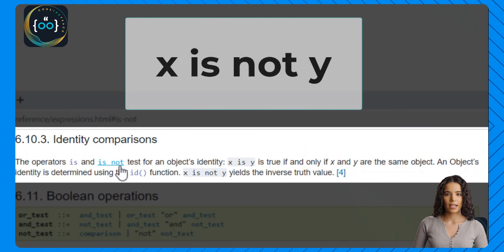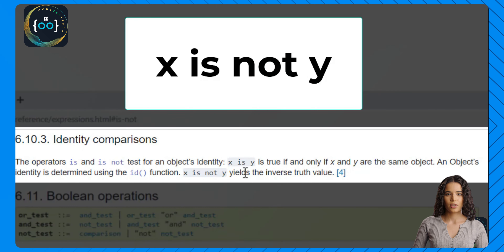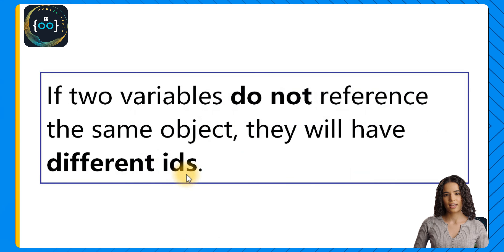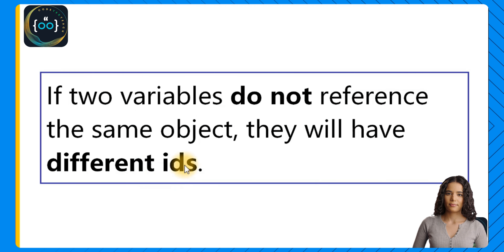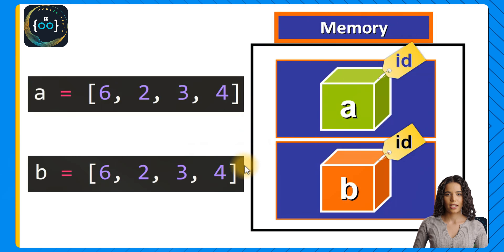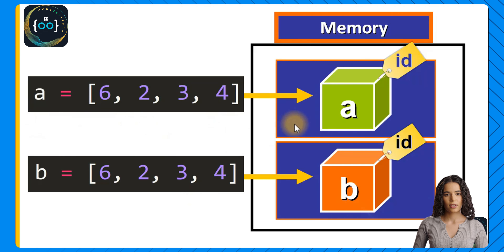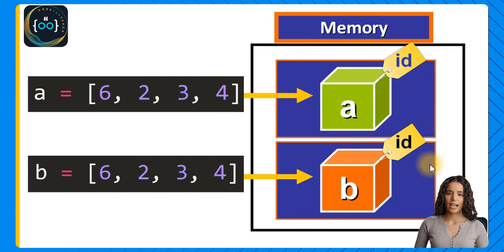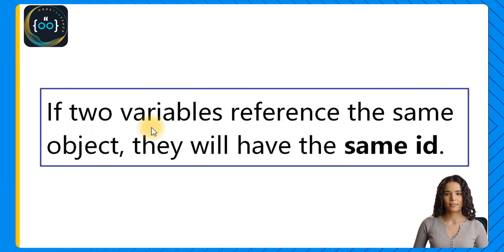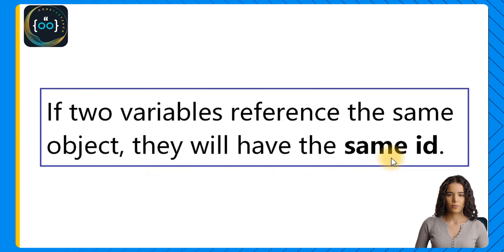If we apply the id function to two variables and their ids are different, that means they do not reference the same object. For example, two lists with the same value — since we are defining them separately — represent different objects in memory with different ids. In contrast, if two variables do reference the same object in memory, then when we apply the id function they will have the same id. Right here we have two variables referencing the same object: the list is created and assigned to variable a, and when we assign a to b, we are actually assigning the same reference to variable b.